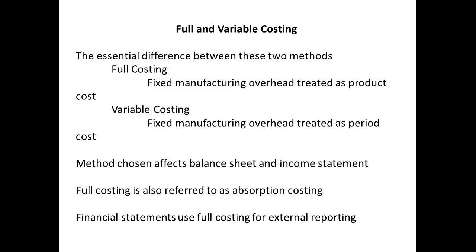So what are the differences between the two methods? The essential difference relates to the treatment of the fixed manufacturing overhead. Under full costing, this is treated as a product cost. Under variable costing, fixed manufacturing overhead is treated as a period cost.